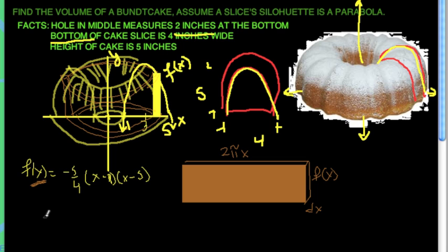The volume of the bundt cake is going to be equal to the integral from one to five. And it's best to think of an integral in this case as a sum from one to five of the volumes of all these cross sections right here. What's the volume of this cross section? Well, this is easy. This is just height times length times width.